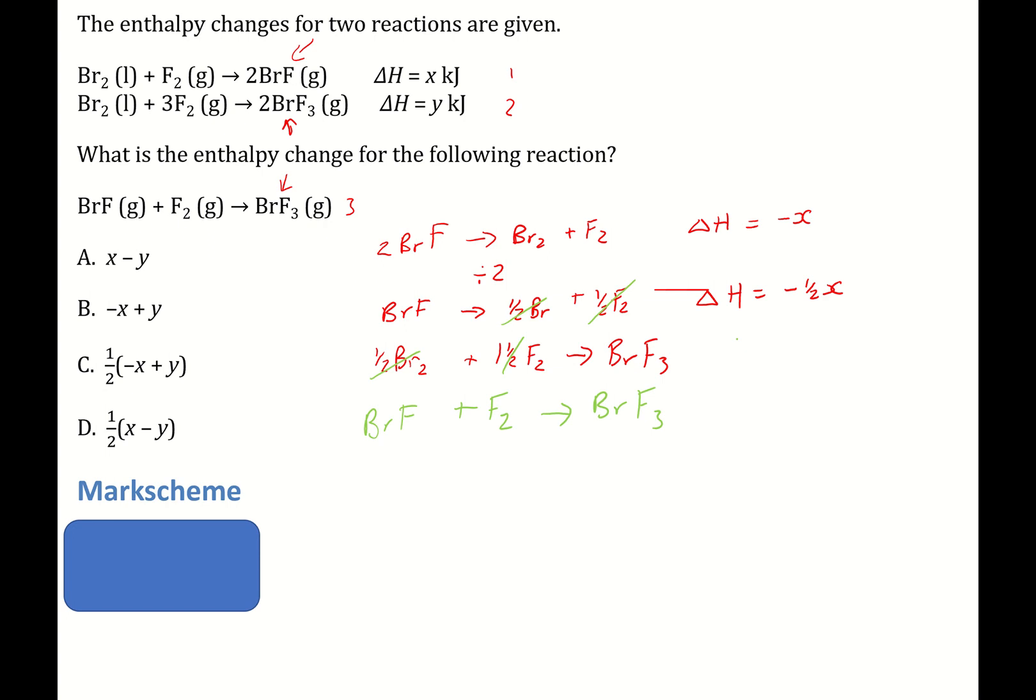Now we didn't account for what we did with the energy change for Y. So let's have a look at that. Now, so the delta H would equal, remember we've just halved this, so it would be half Y. Now, this equation, I can tick off with 3. That's what we want.